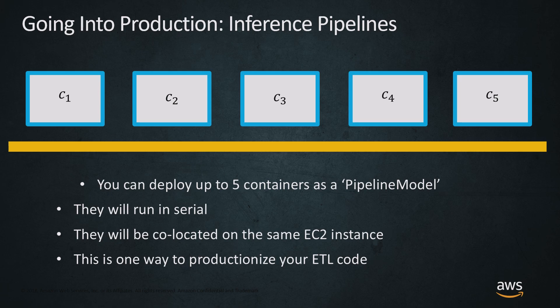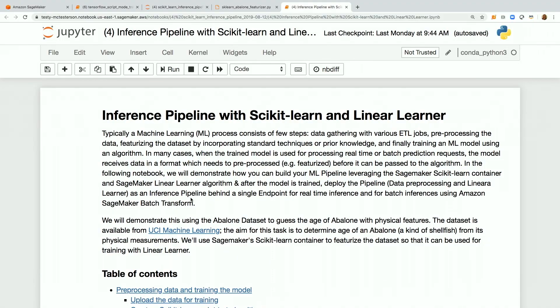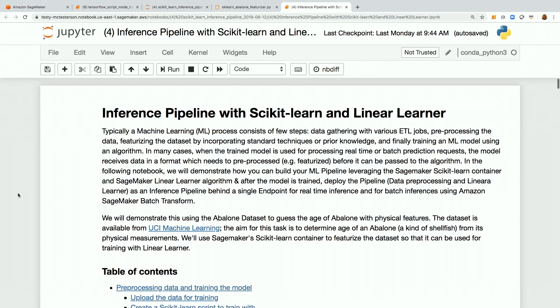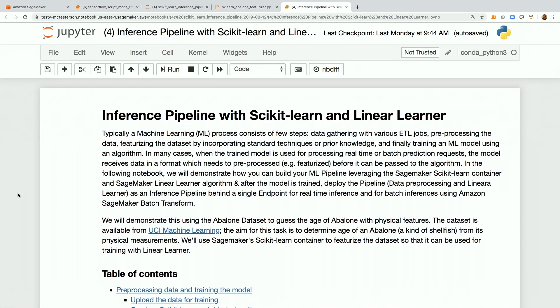That's one EC2 instance using one of those containers for any point in time. This is one way you can productionize your ETL code in SageMaker. So with that, let's check out an example. We are on a SageMaker notebook instance in US West Oregon. This example is coming from those SageMaker examples - 200 plus notebooks, this is one of them.